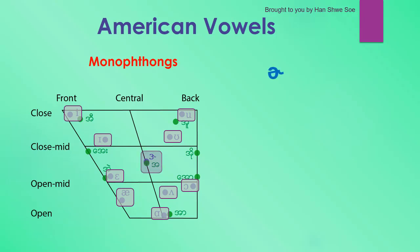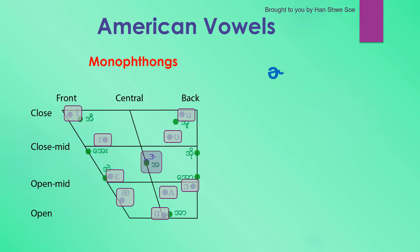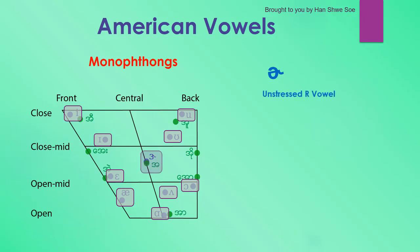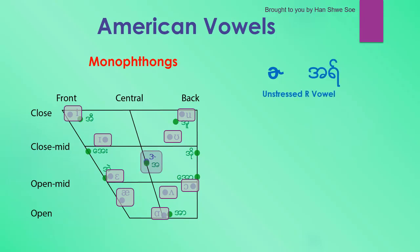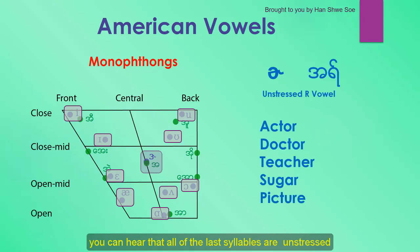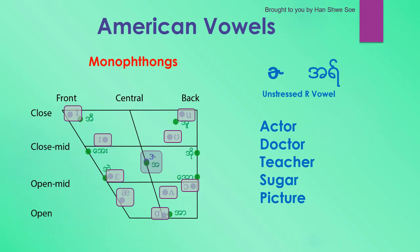The next symbol is schwa with an R sound. It's used when R follows a schwa vowel and it's still unstressed. It's pronounced as a short R. Examples: actor, doctor, teacher, sugar, picture. You can hear that all of the last syllables are unstressed.